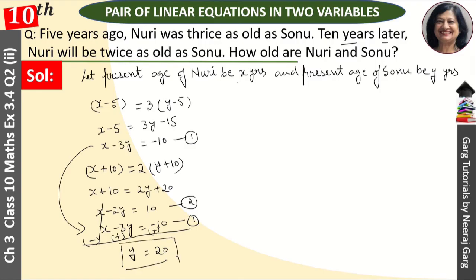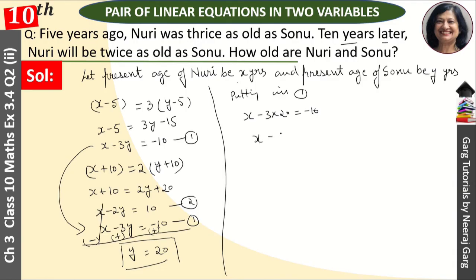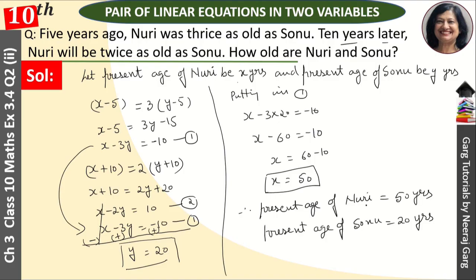Y equals 20 is our value for Sonu's age. Substituting into equation 1: X minus 3 times 20 equals minus 10, so X minus 60 equals minus 10, giving X equals 50. Therefore, the present age of Nuri is 50 years and the present age of Sonu is 20 years. This is our answer.